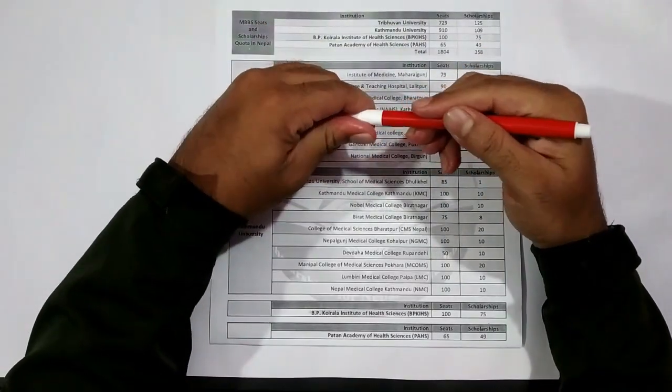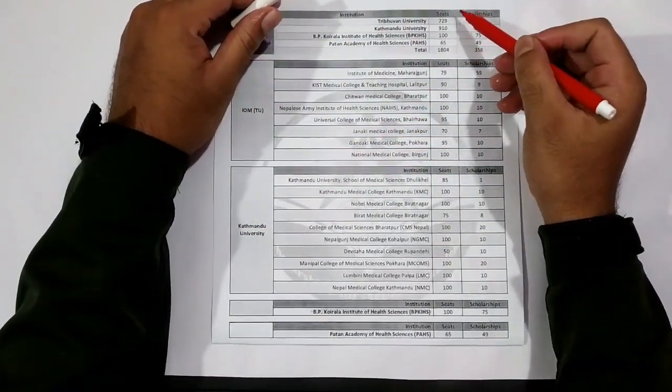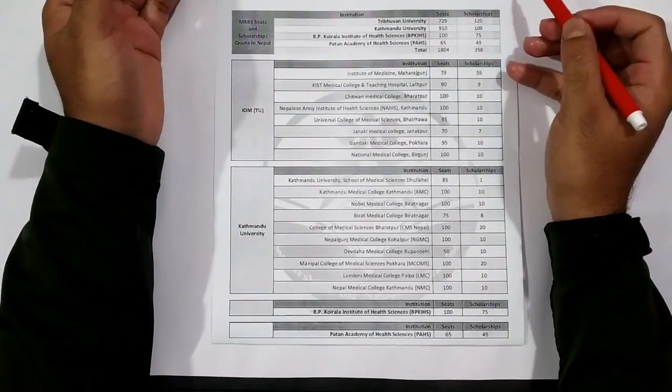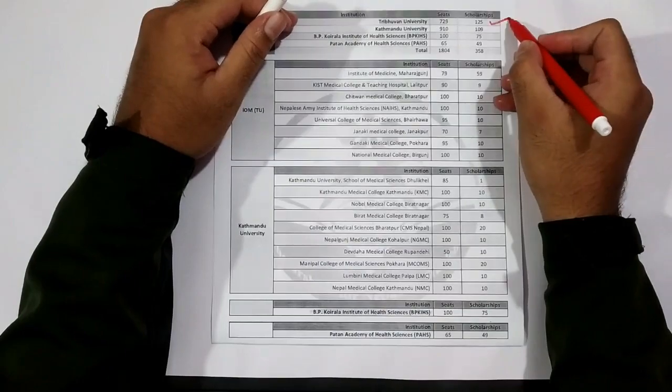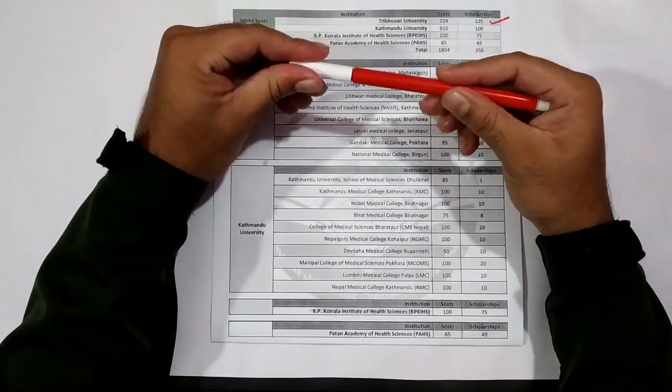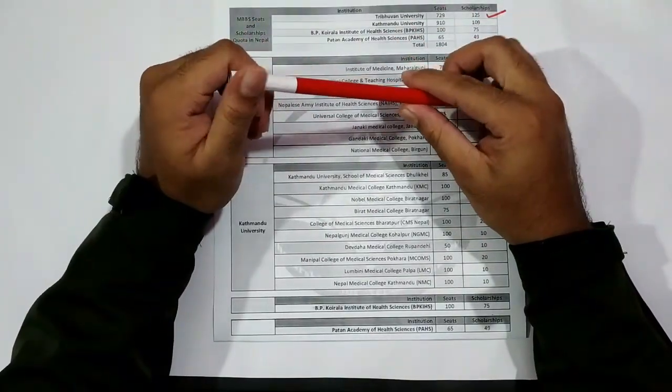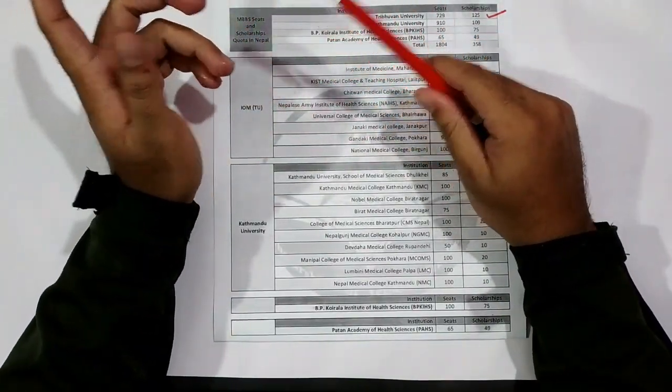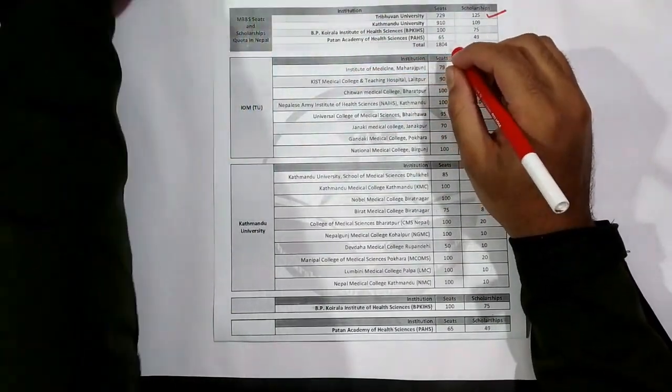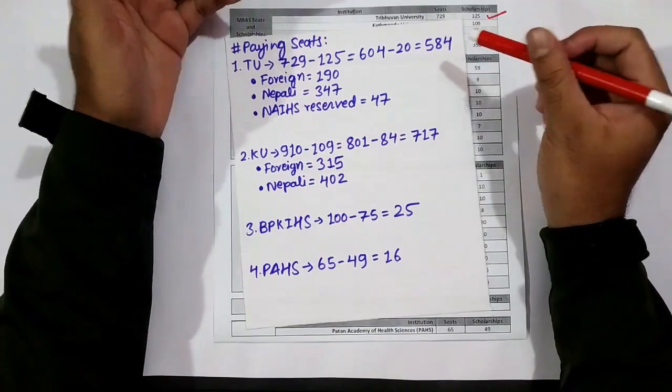Now if we consider this as our official seat allocation, we find it has allocated 729 seats for TU affiliated colleges, of which 125 are for scholarship. There will be lots of questions about the foreign seats as well as the Nepali seats in the paying categories.